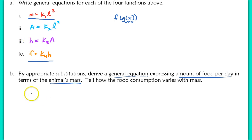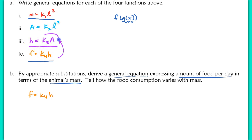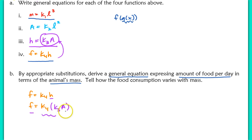We begin with the last equation: F equals K₄ times H. The goal is to use substitution multiple times to go from food consumption all the way back to mass. First, I'll eliminate H by substituting H equals K₃ times A, giving F equals K₄ times K₃ times A. So food consumption is now directly proportional to skin area A, with K₄ times K₃ acting as a combined constant.